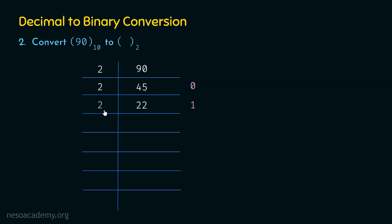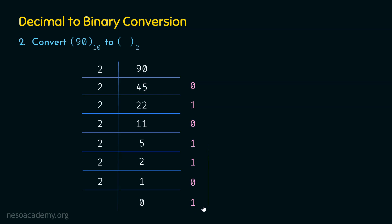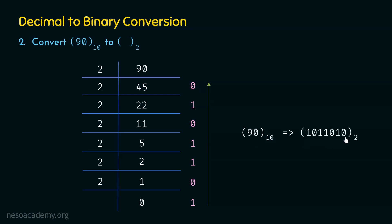We divide 22 by 2, getting 11 as the quotient and 0 as the remainder. Then we divide 11 by 2, getting 5 as the quotient and 1 as the remainder. In the same way, we continue dividing until we get 0 as the quotient, at which point we stop. Reading the remainders from bottom to top, we get 1011010. So the binary equivalent of the decimal number 90 is 1011010, meaning 90 base 10 equals 1011010 base 2.